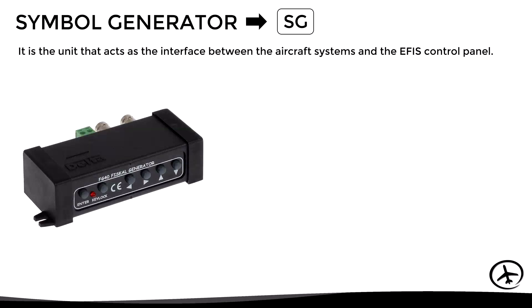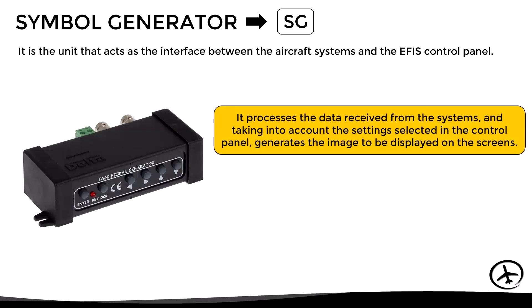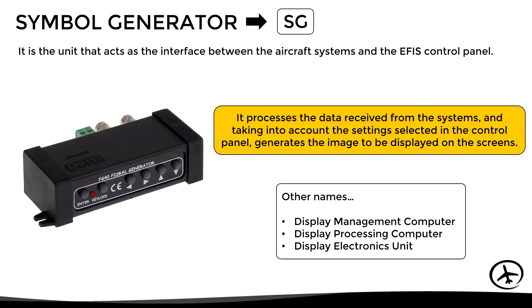Let's see the last component of the system, which is the symbol generator, abbreviated as SG. This unit acts as the interface between the aircraft's systems, the EFIS control panel, and the displays. It processes the data received from the systems and, taking into account the settings selected in the control panel, it generates the image to be displayed on the screens. The symbol generator may be known by other names, such as display management computer, display processing computer, or display electronics unit.